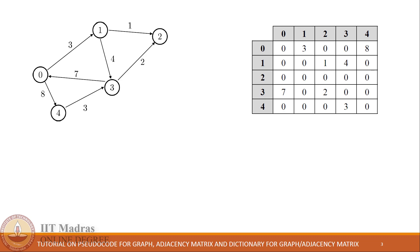A computer system cannot understand or store this graph structure, or even the matrix structure as it is, because so far in this course we have studied only two types of data structures: namely list and dictionary. Now we will try to store this given adjacency matrix into a dictionary so that it can be stored in a computer system.